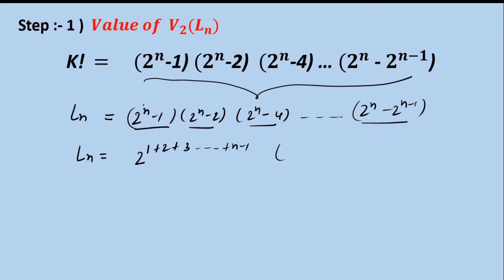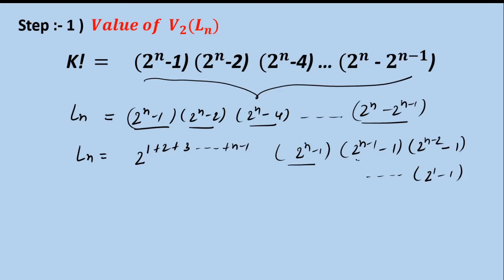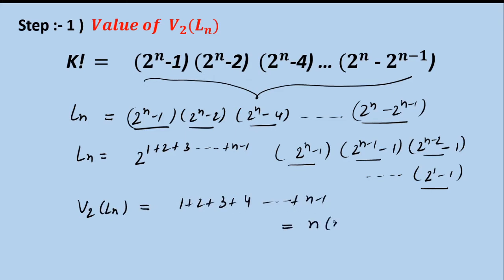The first remaining term is unchanged: 2 raised to the power of (n minus 1). The second term becomes 2 raised to (n minus 1 minus 1), the third becomes 2 raised to (n minus 2 minus 1), and so on. The last term becomes 2 raised to (1 minus 1), which is odd — even minus 1 is odd. Since all remaining terms are odd, they don't contribute any factors of 2. Therefore V2 of L(n) equals 1 + 2 + 3 + ... + (n minus 1) = n(n minus 1) divided by 2.